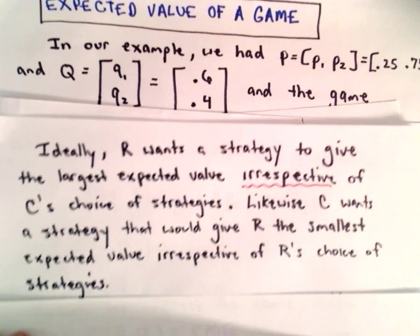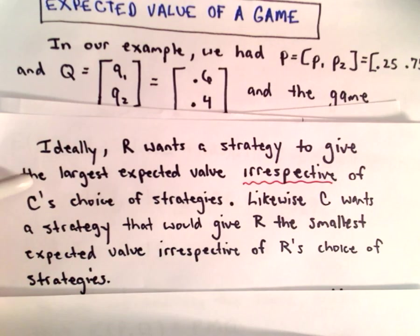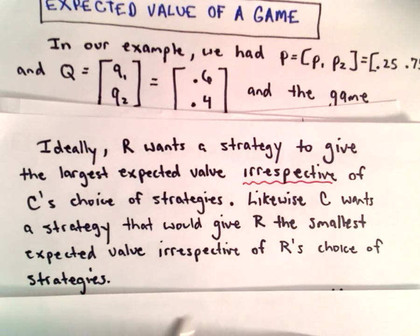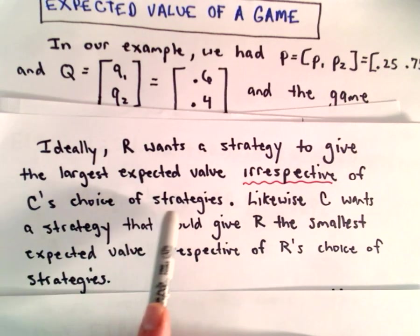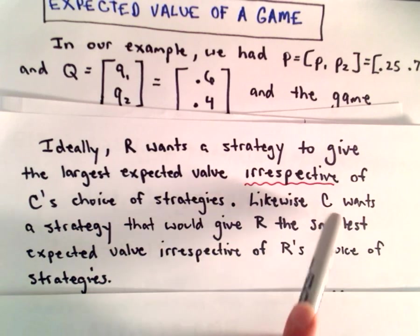So ideally, the first player, the row player, wants a strategy to give the largest expected value because then they're winning as much money as possible. And the interesting thing is they want this strategy to work irrespective of how the column player picks their strategy or their probabilities, which is interesting. It says we really don't have to care at all what the column player does.